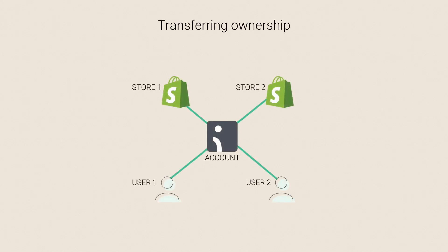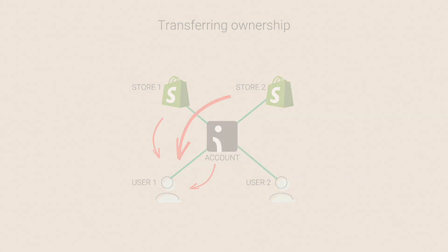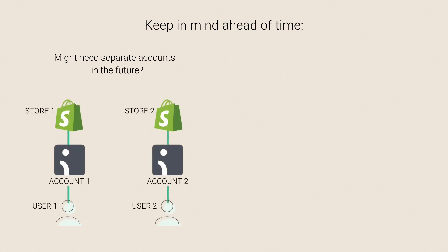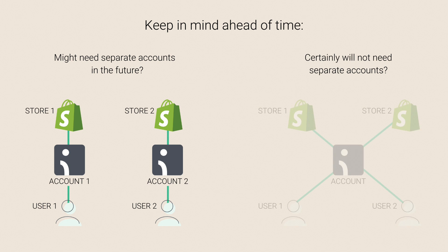You also have the option to transfer ownership of your OmniSend account. Keep in mind that by transferring ownership of the account, you're also transferring ownership of all the stores connected to it to a single person. This is why it's very important to keep the big picture in mind ahead of time. If you might need to have separate stores on separate accounts in the future, create separate accounts for each store right away. If you're certain you won't need to do that, then it's more convenient to have your multiple stores under one master account.